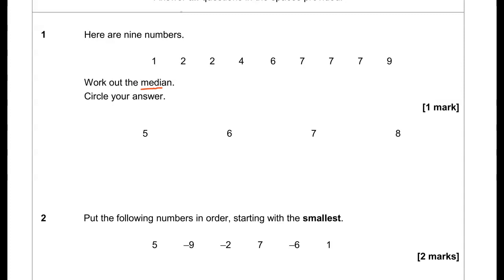So to work out that middle number I'm going to cross out one on each side each time. And then we have six in the middle. So we've got to circle the answer and that is six.